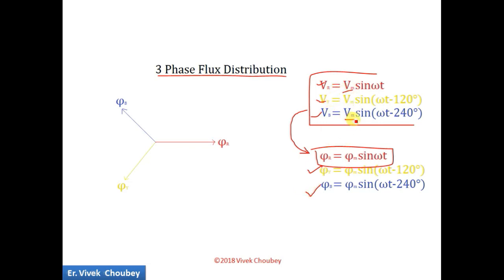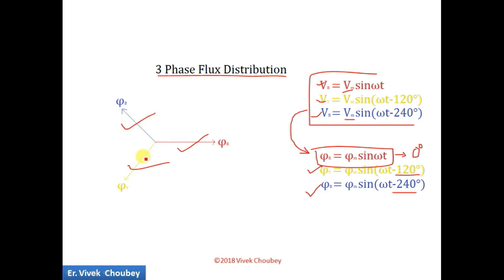Corresponding to this three phase AC voltage, we have three phase flux: the R phase flux, Y phase flux, and B phase flux. The 'm' factor indicates the maximum or peak value. So φR = φm·sin(ωt) at zero degree angle, φY will be at minus 120 degrees, and φB will be at minus 240 degrees. I have drawn this three phase flux — φR at 0°, φY at −120°, and φB at −240°.